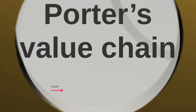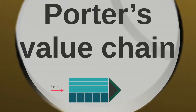The value chain is all about taking inputs, putting them through the value chain of the organization, adding value during that process, and then producing an output that is passed on to the consumer at a profit, so that the company can take that profit and put it back towards more value-adding activities, towards more inputs and so on. So let's look at an example of how value can be added.